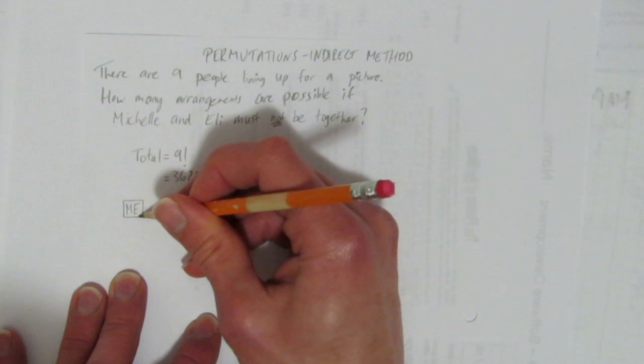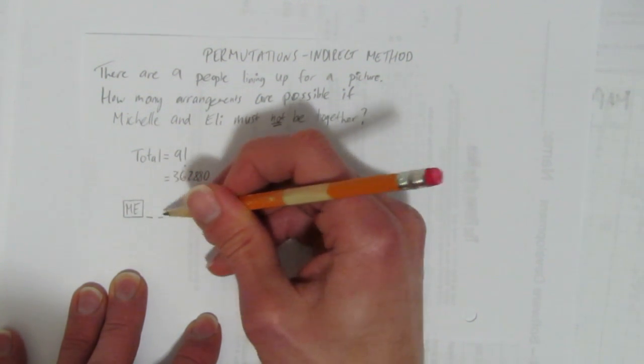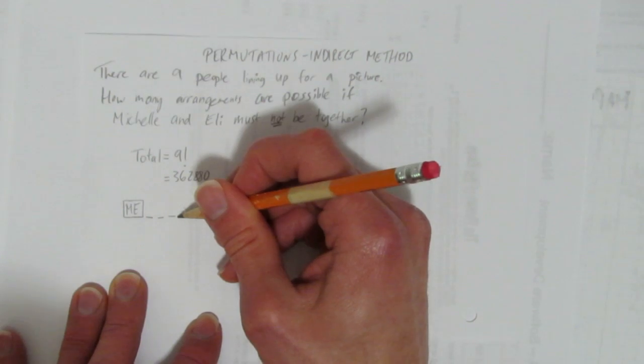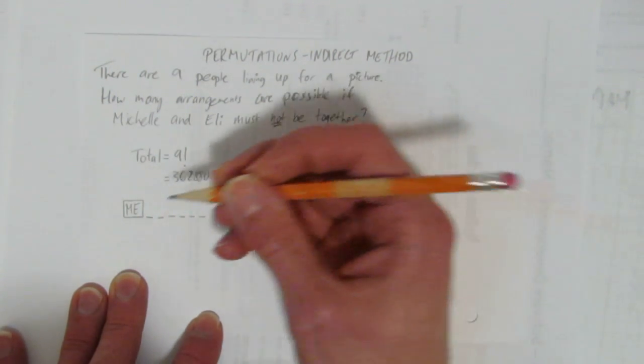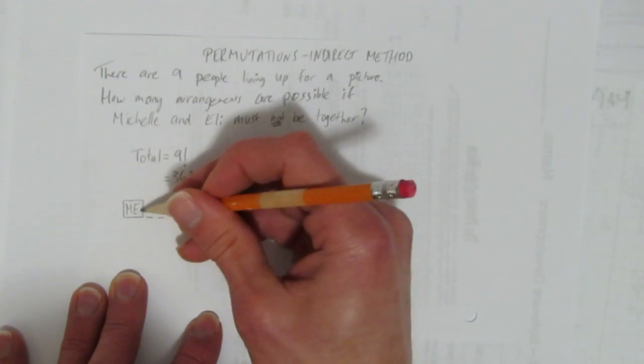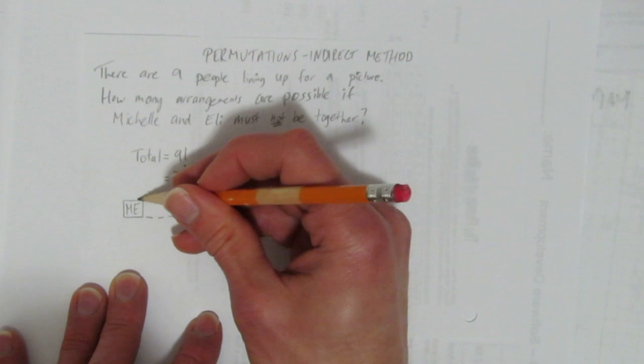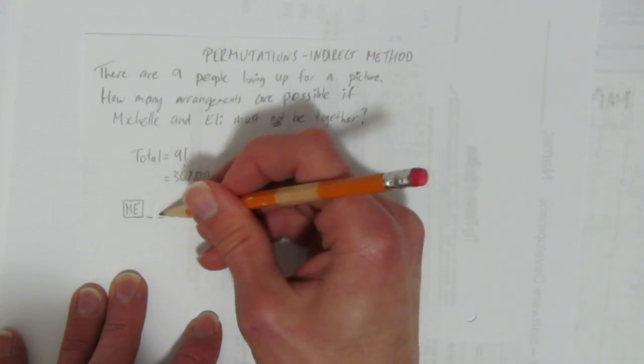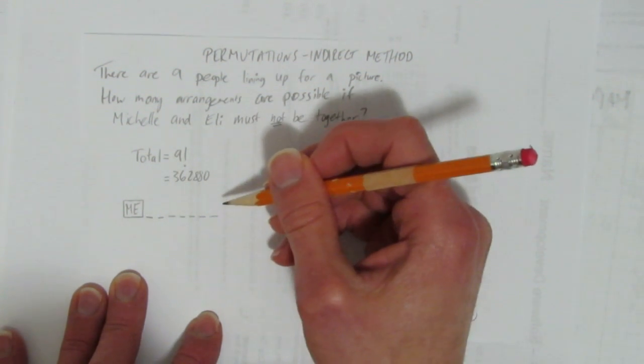Michelle and Eli could be here at the beginning, or they could be there, or they could be in between there. There could be three people, then Michelle, Eli. And what you see is that they move as if they're one individual, as if they're one item. And we have seven other items.